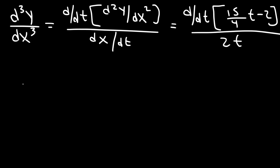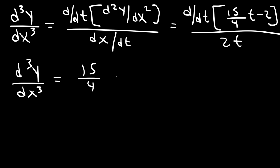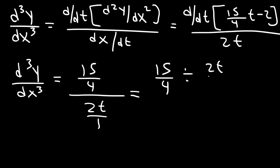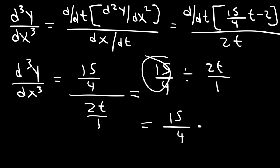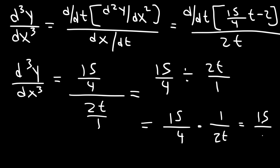The derivative of 15/4 times t is just 15/4, and the derivative of negative 2 is 0. So we have 15/4 divided by 2t. You can rewrite this as 15/4 divided by 2t over 1, then use keep, change, flip: keep the first fraction, change division to multiplication, and flip the second fraction. So the third derivative in this example is 15 divided by 8t. And that's the answer.